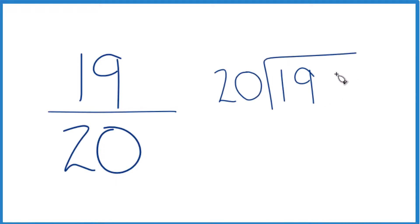20 doesn't go into 19, but we could call this 190 as long as we put a zero and a decimal point up here. Now, 9 times 20, that's 180. And when we subtract, we get 10.